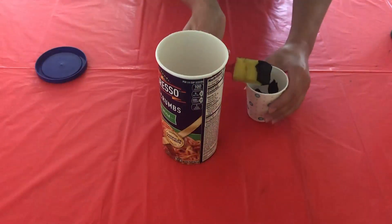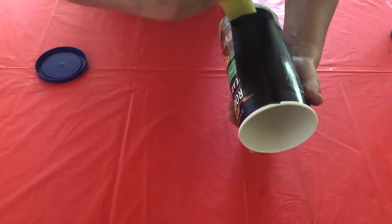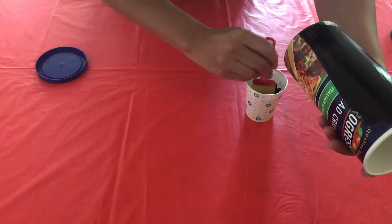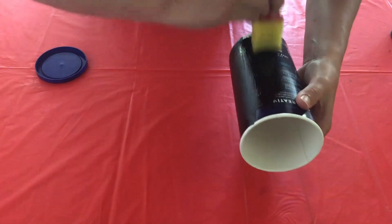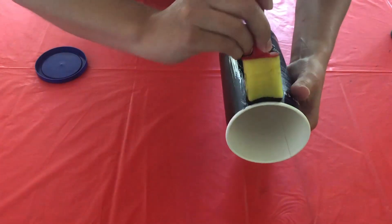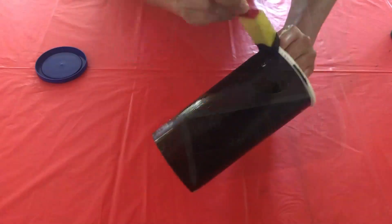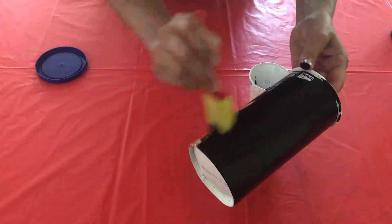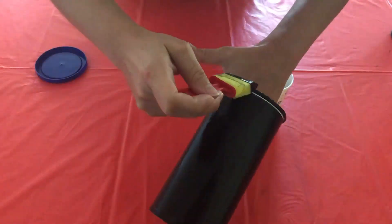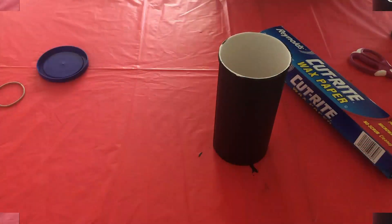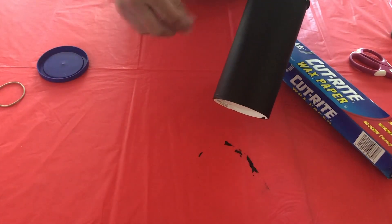So what I'm gonna do is I'm going to paint my container completely black. Now if you don't want to wait for the paint to dry, you are more than welcome to wrap black construction paper around it. Okay, so if your container is taking a while to dry, you can use a hairdryer on low setting and use that to help it dry a little bit faster.